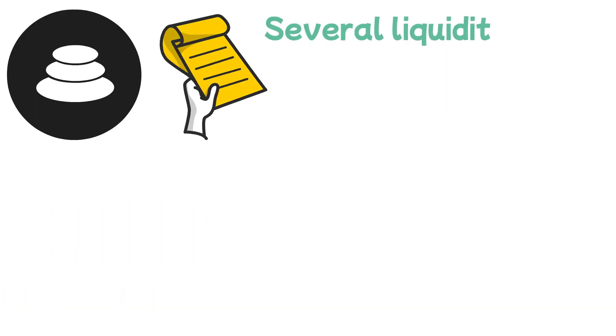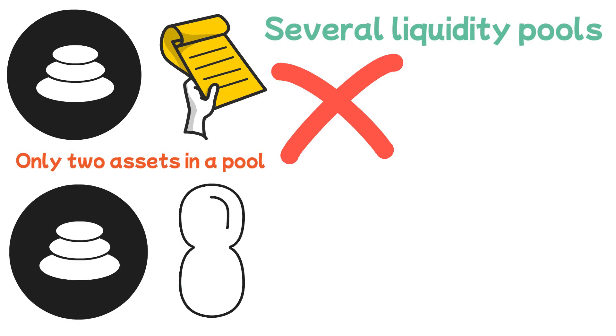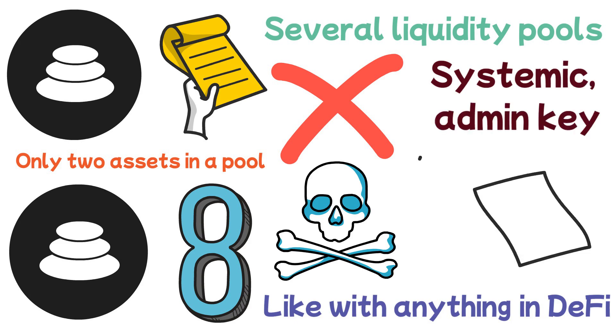Balancer came up with another concept for several liquidity pools after realizing that we are not restricted to having only two assets in a pool. As a matter of fact, Balancer permits up to eight tokens in a single liquidity pool. Of course, like with anything in DeFi, we also need to be aware of any potential dangers outside the typical DeFi risks, including systemic, admin key, and smart contract issues.